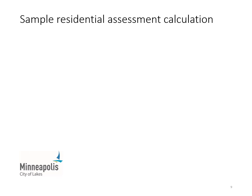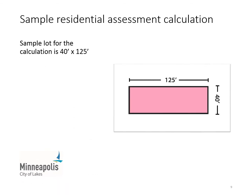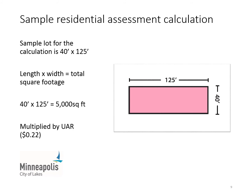This slide illustrates how your assessment is calculated using the dimensions of a standard residential lot where all of the parcel is within the influence area of the project. The total square footage is determined by multiplying the length by the width. For this example, we'll multiply 40 feet wide by 125 feet long for a total of 5,000 square feet. This number is then multiplied by the uniform assessment rate of 22 cents per square foot, resulting in a total special assessment of $1,100 for this lot.